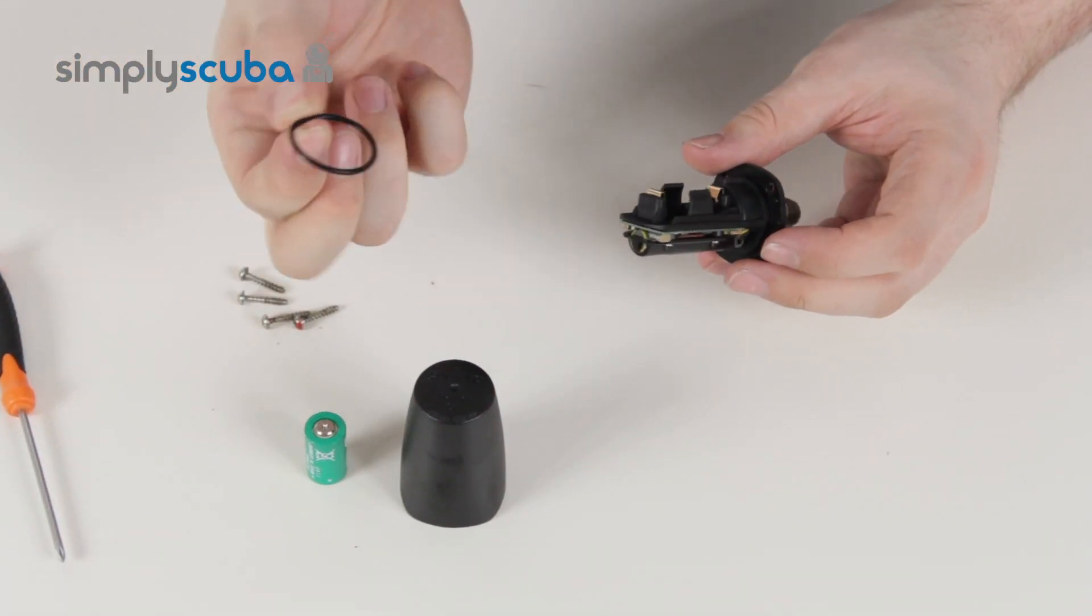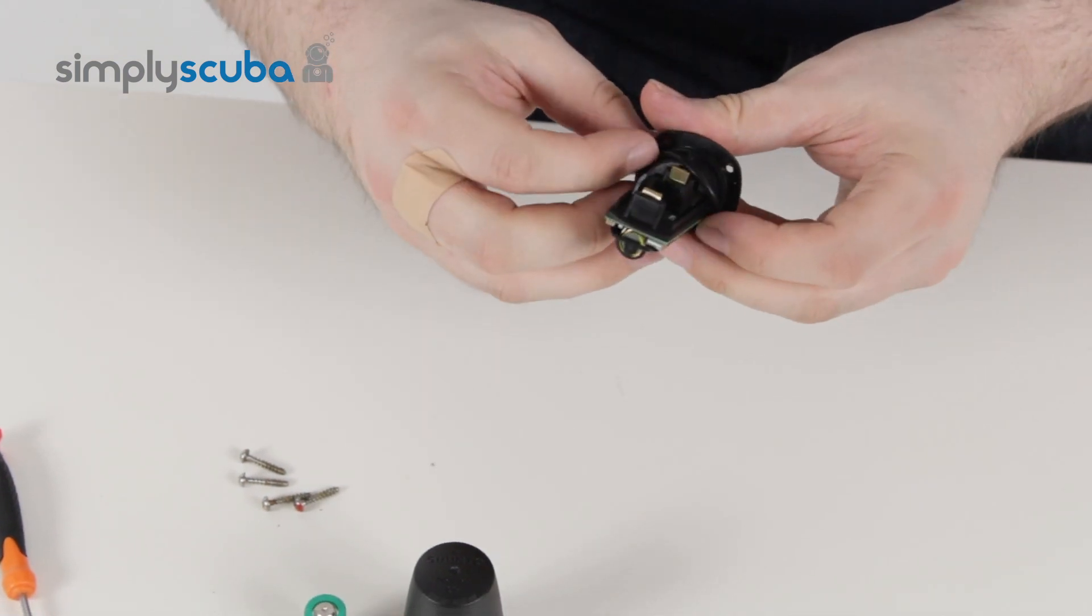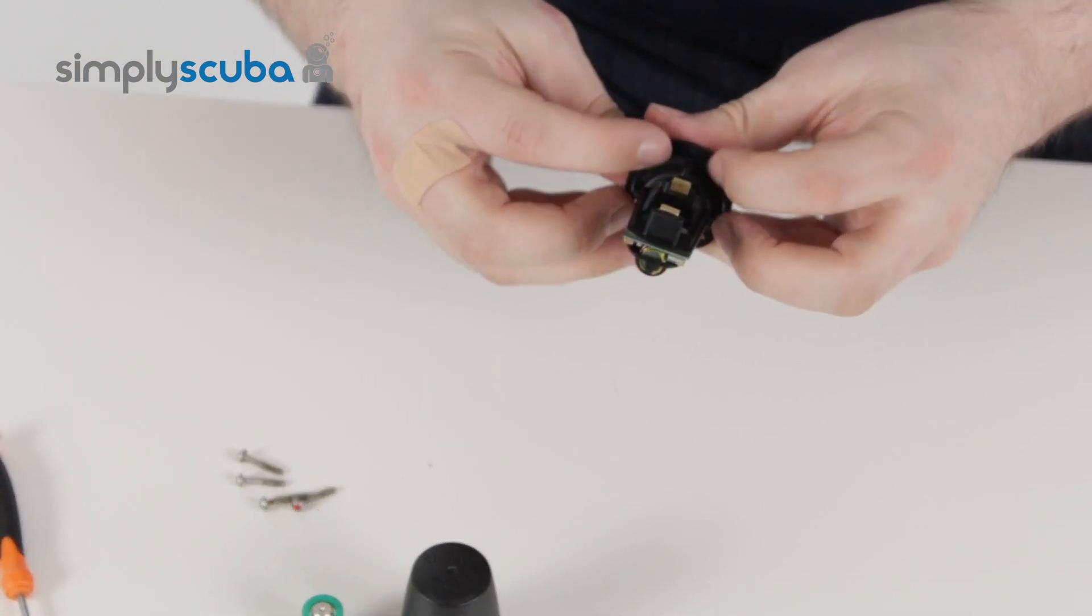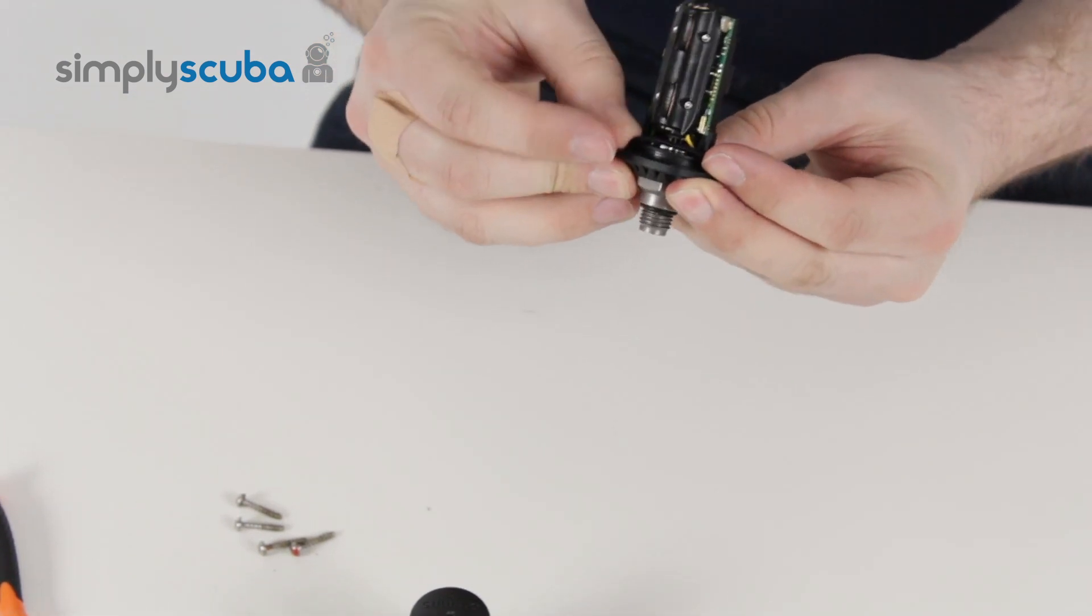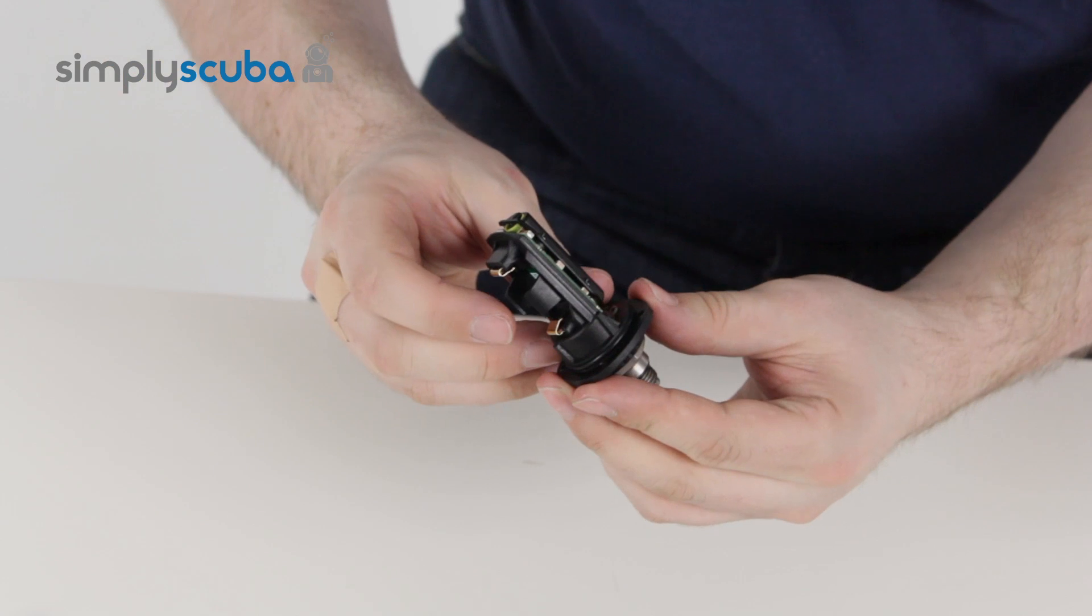The new o-ring, fit that. You don't need to lubricate this because it's a static o-ring, there's no movement in it. You just want to make sure that it's free from dust and dirt, and just fit that in nice and neatly, make sure it's nice and clean.